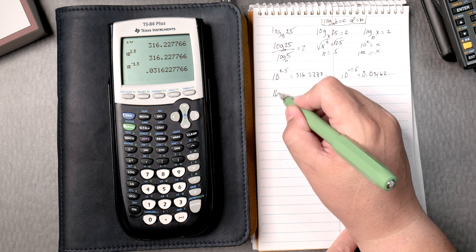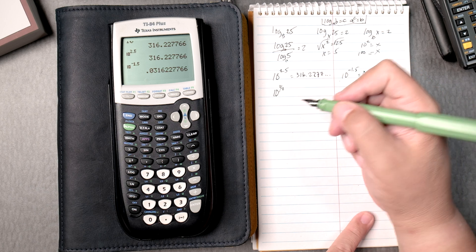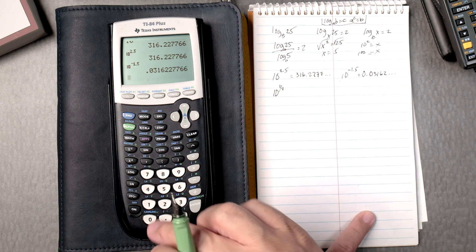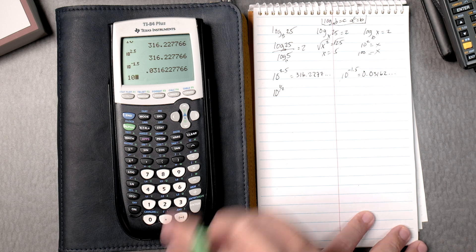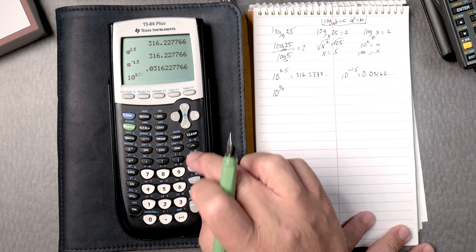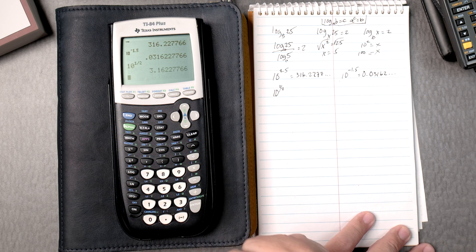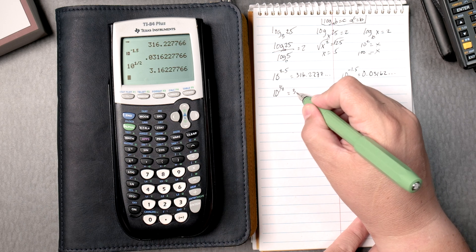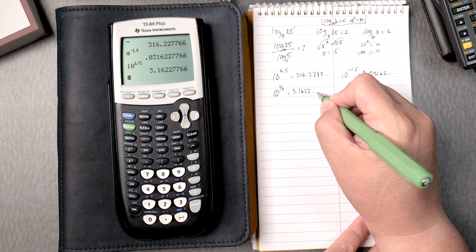Then let's say 10 to the half power. You press 10, you have the caret key, and then you say 1 divided by 2, gives you half, and that gives you 3.1622, and so forth.